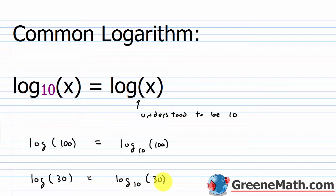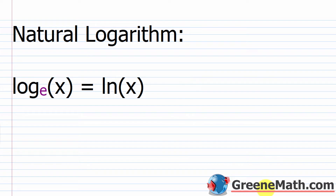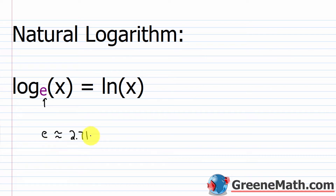Now another important logarithm we're going to come across is known as the natural logarithm. The natural logarithm obtained its name because of its place in biology and natural situations where growth or decay is involved. The natural logarithm has a base of e, and e is approximately equal to 2.71. This number is going to come up a lot — think of it like another special irrational number such as pi, where after the initial digits there's an infinite number of digits with no pattern.